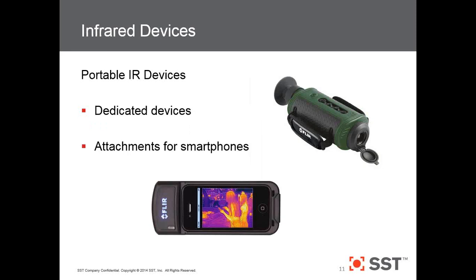Infrared devices. There are dedicated handheld devices as well as new ones that attach to smartphones, and these would also be good to help locate shell casings. Depending on the climate, shell casings may have cooled down significantly by the time you secure the scene, but the handgun should still be warm enough. We suggest searching out to 25 meters, and using the infrared device within the perimeter to look outside it — you might even find a victim who was shot and stumbled out with no visible blood trail.